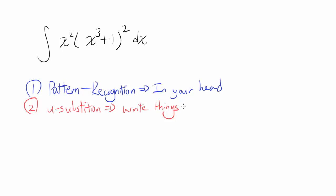You may ask: why can't we use pattern recognition every time? Pattern recognition is considerably faster than u substitution. Once you get more accurate and have had practice, I do recommend using pattern recognition when you can. But when problems get much more complex, u substitution — actually writing things out — can help you immensely and organize your work. So depending on the type of problem and how much practice you've had, you should alternate between pattern recognition and u substitution. I recommend you master both ways.